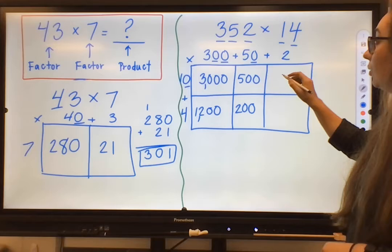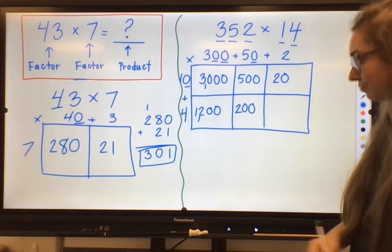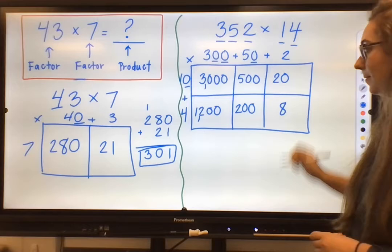10 times 2, where I can think of it as 2 times 1, which is 2. Add 1 zero, 20. And finally, those two 1s place digits. We've got 4 times 2, which is 8.